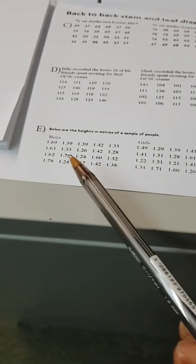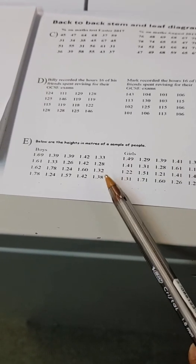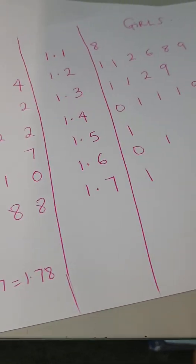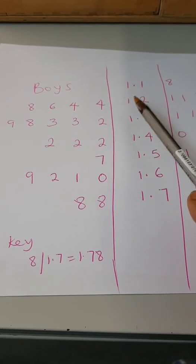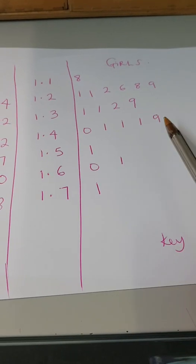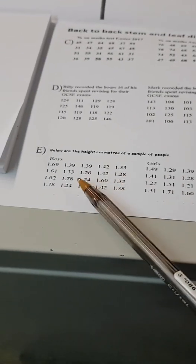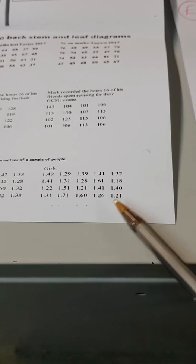Looking back at the data, we only have one-point-something values throughout — you can clearly see it's all 1.something. We don't have anything like 2-point-something or 3-point-something. Because it's all 1-point-something, what you should do is split your stem and leaf like this: you have 1.18 as the minimum on the girls' side and 1.24 as the minimum on the boys' side — and that's confirmed by checking the data.